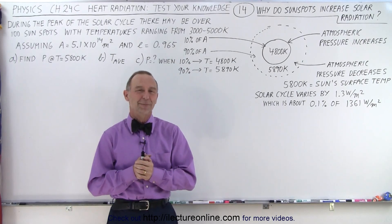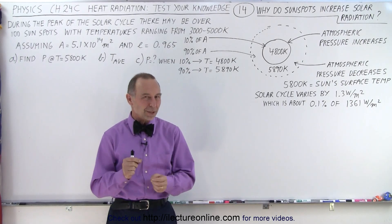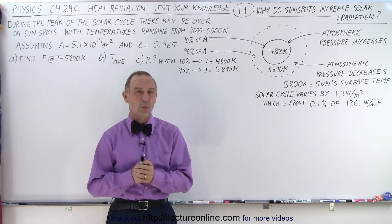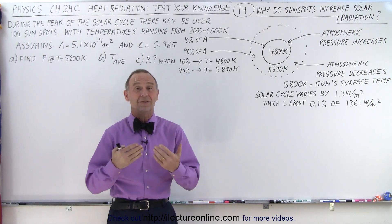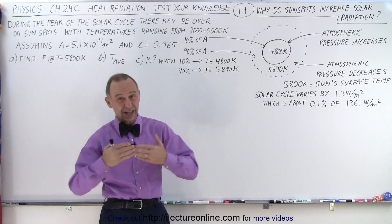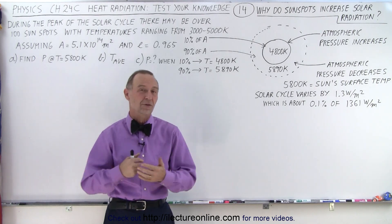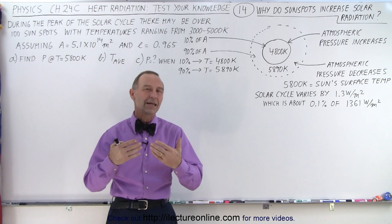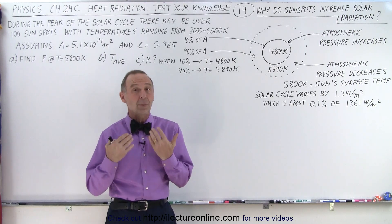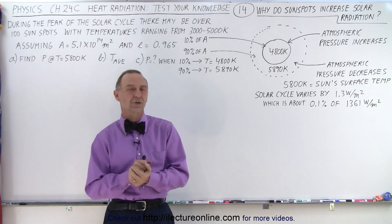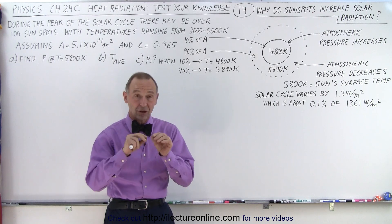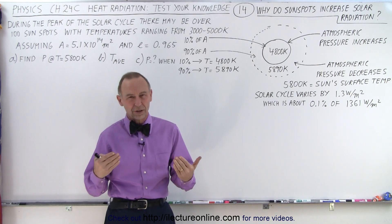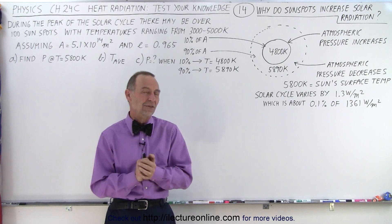Welcome to our Lecture Online. There's something about the Sun that has puzzled me for a very long time. Why is it that during the height of the solar cycle, when there's lots of sunspots on the surface of the Sun, the actual intensity of the sunlight is greater than when there's no sunspots? The sunspots themselves are cooler than the rest of the surface of the Sun, so that didn't appear to make a lot of sense.